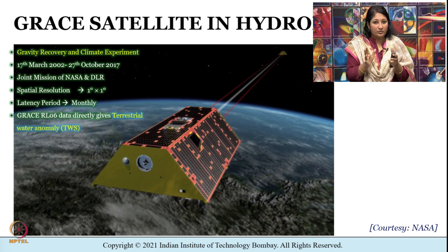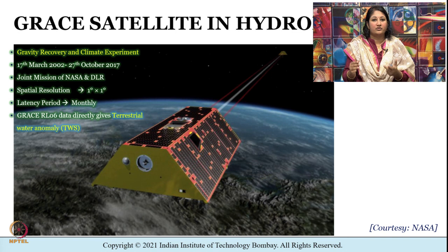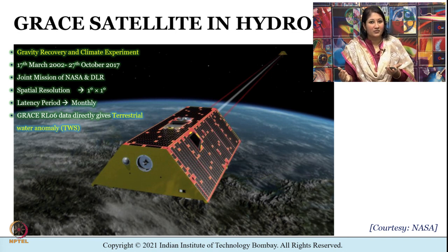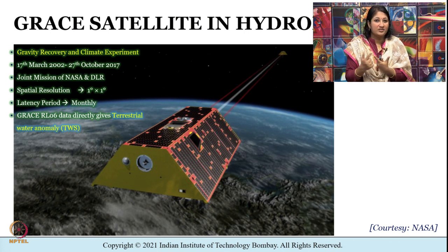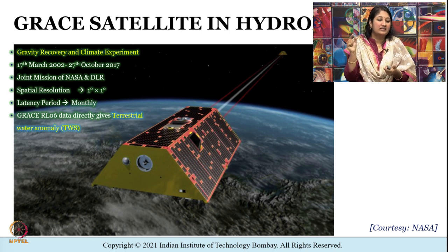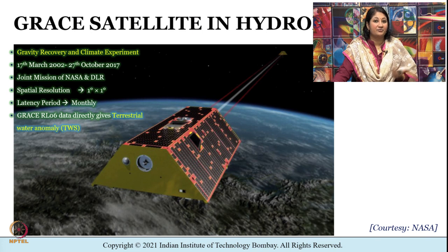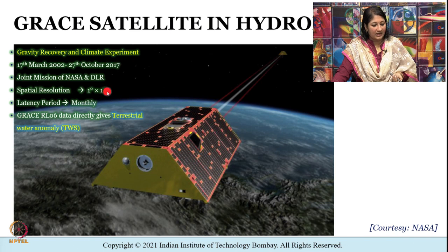When the twin satellites of GRACE pass over a region like the Himalayas or the oceans where there is an increase or decrease of gravity, the distance between both spacecraft will change. This change in distance allows the satellites to map the Earth's gravity field. Given here are the spatial resolution and latency period of GRACE.